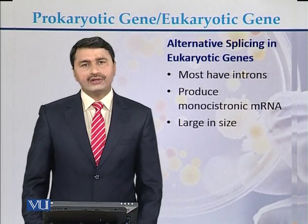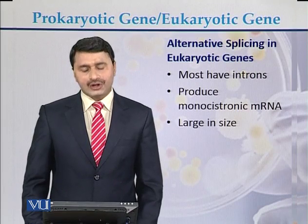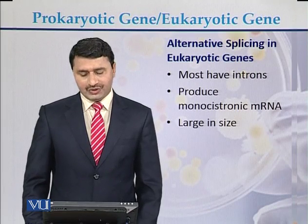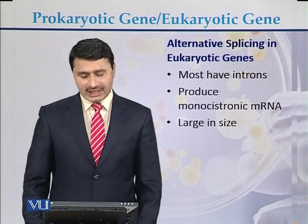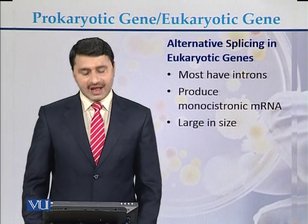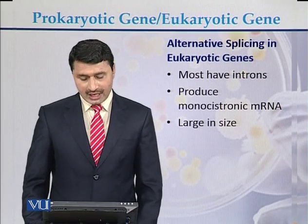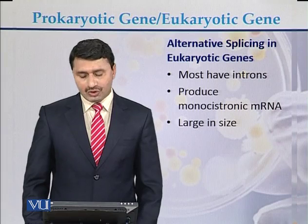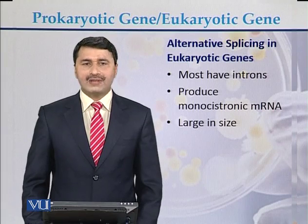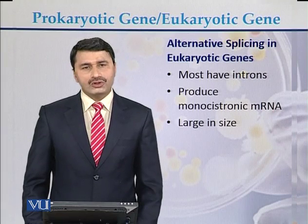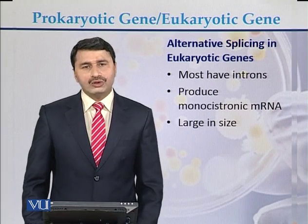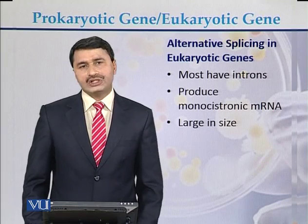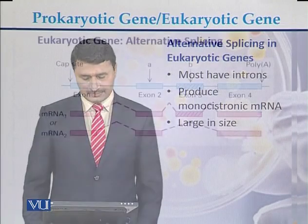Most eukaryotic genes have alternative splicing, most have introns, and they produce monocistronic messenger RNA. Most eukaryotic genes are also large in size.